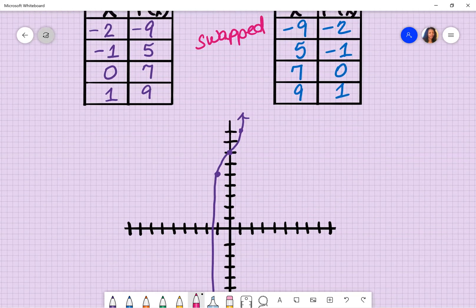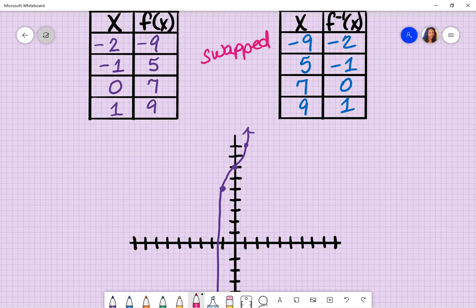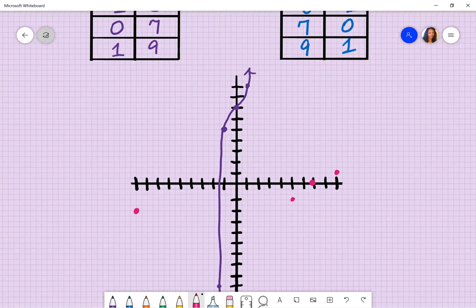Let's just go ahead and graph this. I've already graphed the original function. Let's attempt to graph the inverse function. So that's going to be negative 9, negative 2, 5 and negative 1, 7 and 0, and 9 and 1. That's what I have in my table. So I'm going to try my best to graph this correctly. So it looks something like this. Not going to be perfect.